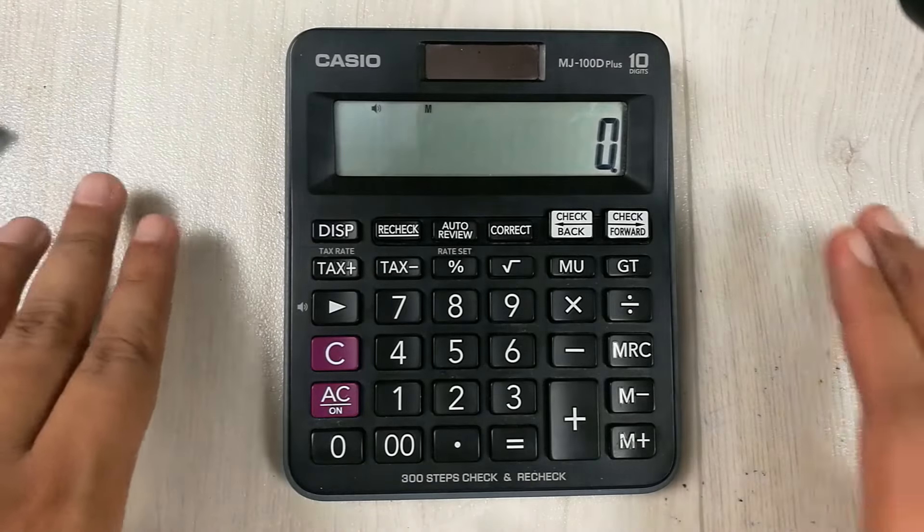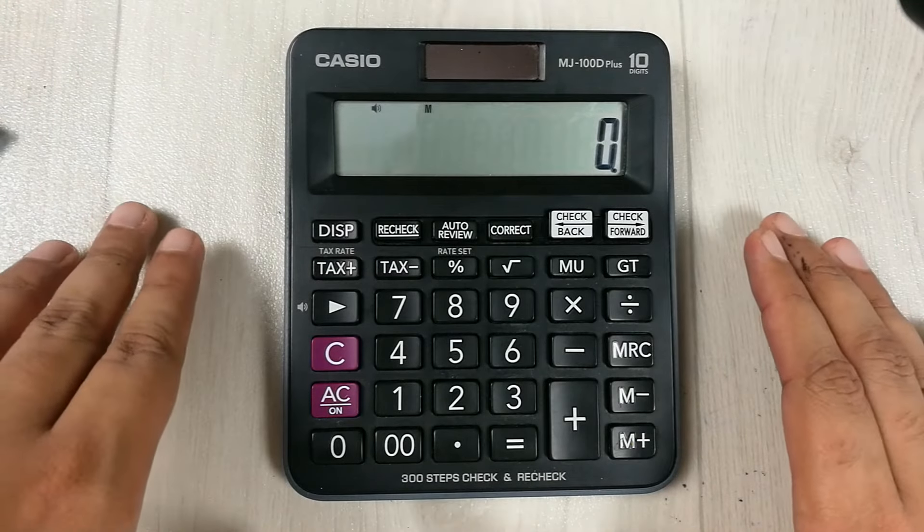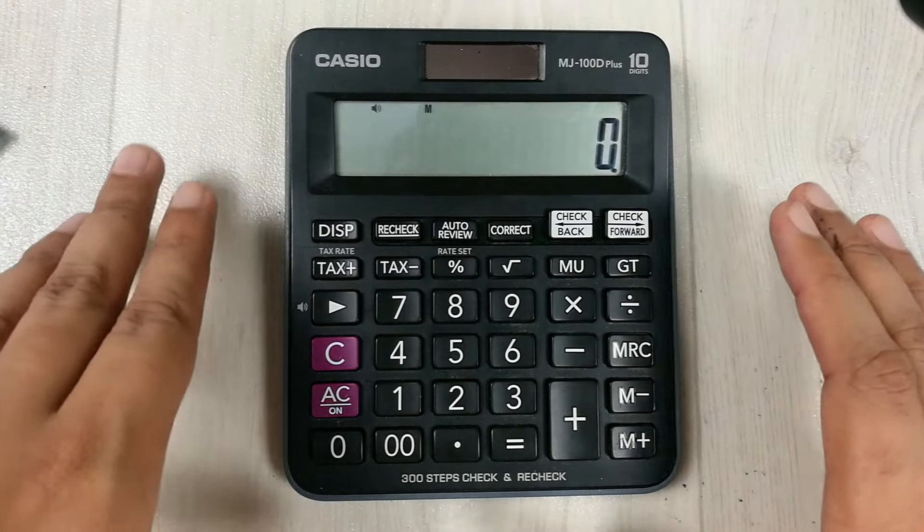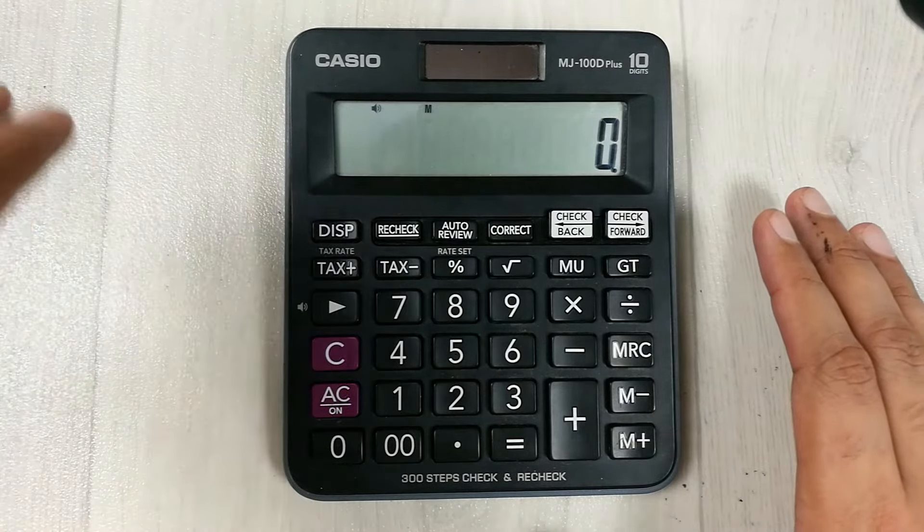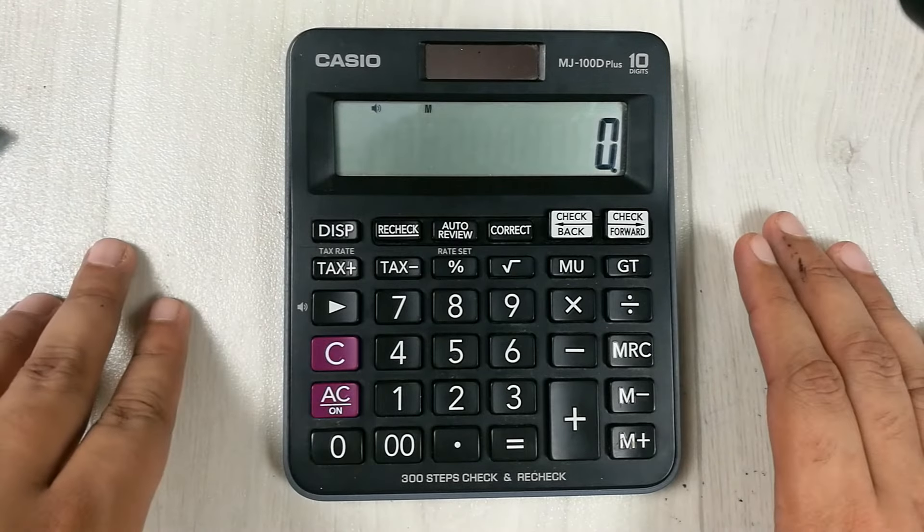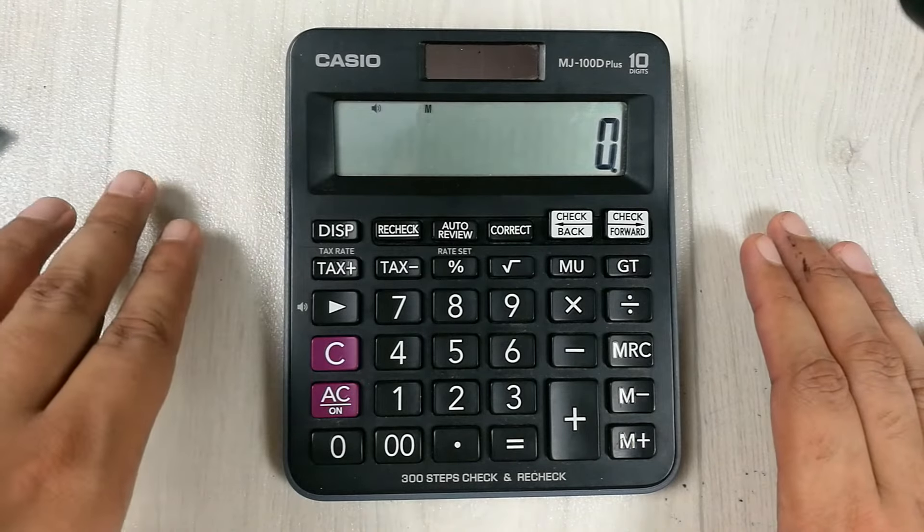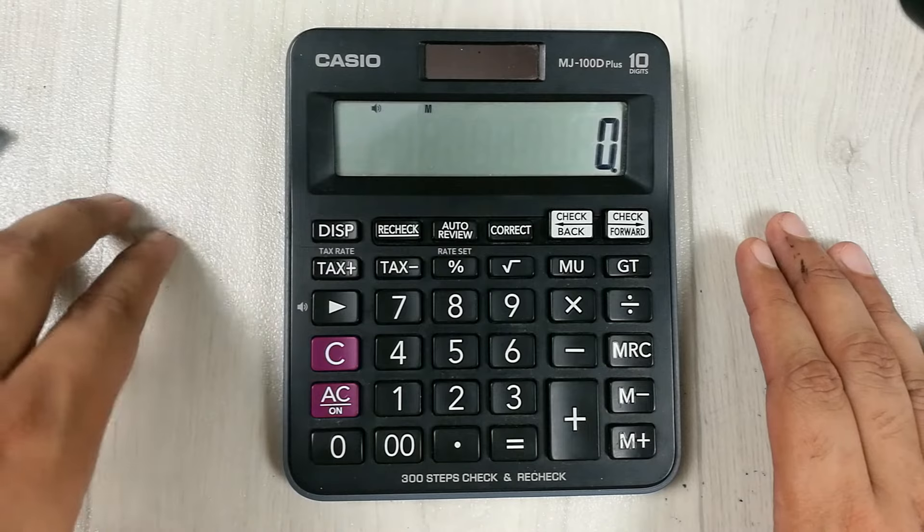Hello guys, I hope you are doing really well. In today's video, I'm going to show you how to calculate 10% off a price on calculator. For example, we have an item and the price of that item is 7600.